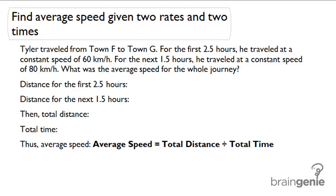Find average speed given two rates and two times. Tyler traveled from town F to town G. For the first 2.5 hours he traveled at a constant speed of 60 kilometers per hour. For the next 1.5 hours he traveled at a constant speed of 80 kilometers per hour. What was the average speed for the whole journey?